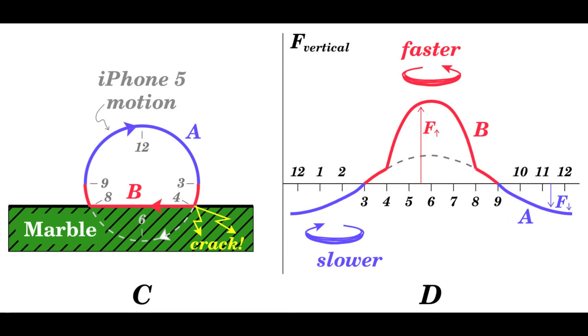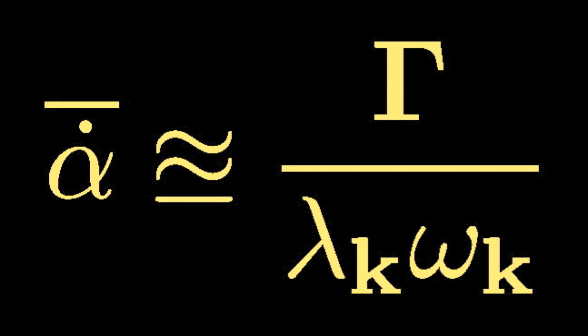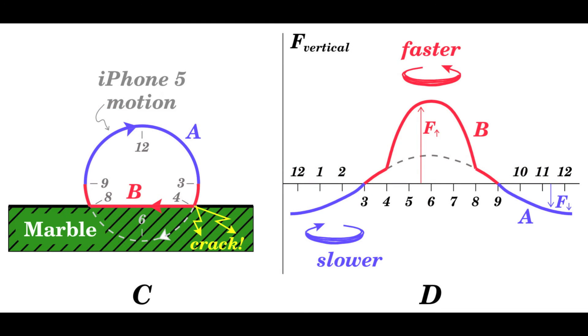What happens is a greater torque, which causes a faster precession, is applied during one of the seesawing motions, the one where the phone is pressing on the table. Because the table is in the way, the phone cannot make its full loop, and the table, according to Newton's third law, every action has an equal and opposite reaction, exerts a greater force on the phone.